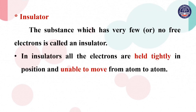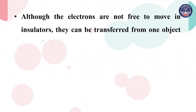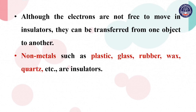In an insulator, all the electrons are held tightly in position and are unable to move from atom to atom. Insulators are materials that hardly conduct electricity. Although electrons are not free to move in an insulator, they can be transferred from one object to another.